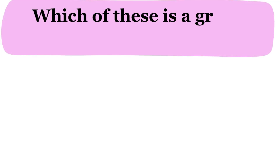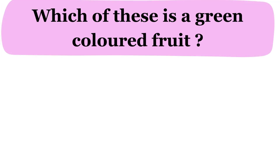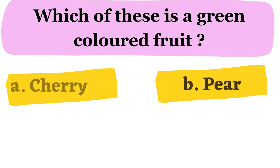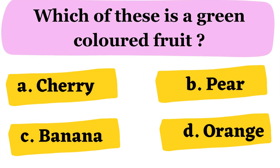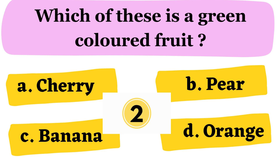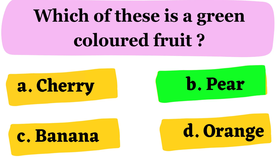Next question. Which of these is a green colored fruit? A. Cherry B. Pear C. Banana D. Orange. The correct answer is option B. Pear.